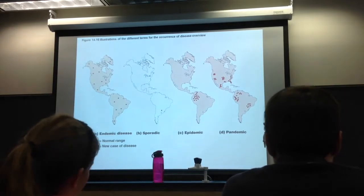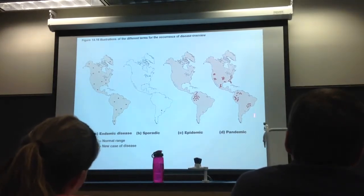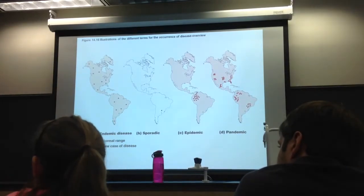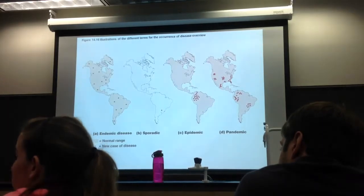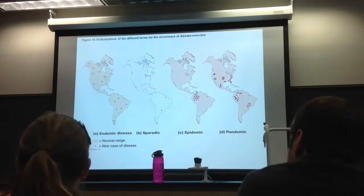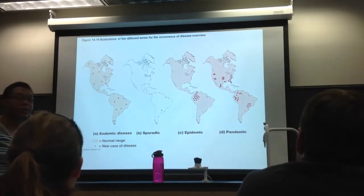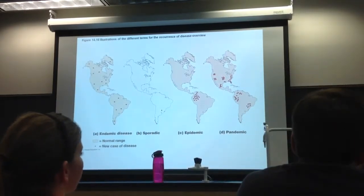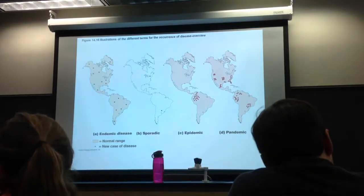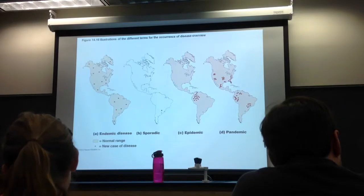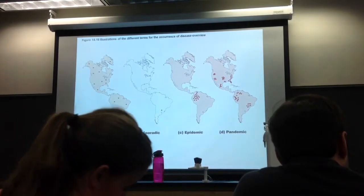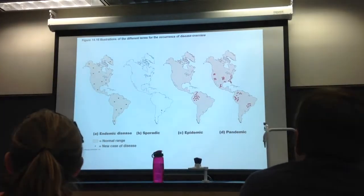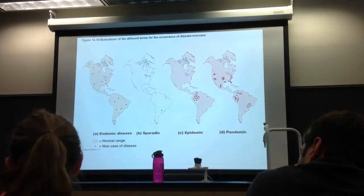A pandemic is an epidemic that is out of control, affecting multiple nations and multiple continents. The flu pandemic a few years ago started in Asia as an epidemic and spread to our side — it became a pandemic. How? Airplanes, simple as that. Make sure you have a good handle on these terms: endemic, sporadic, epidemic, pandemic.